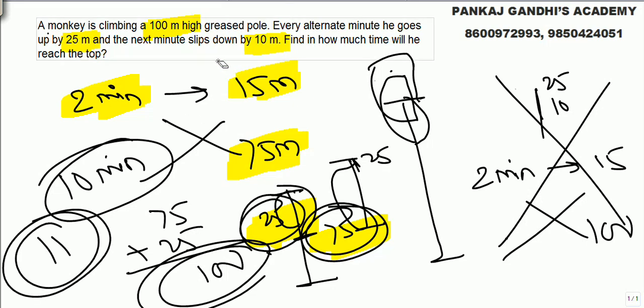The logic for these kind of questions is you make a cycle: up down, 2 minutes, 15 meters. In one go monkey can go up by 25. From 100 subtract 25, you get 75. In 2 minutes 15, how many minutes 75? 10 minutes, 5 cycles of up down. Next minute it will reach the top. Answer is 11 minutes.